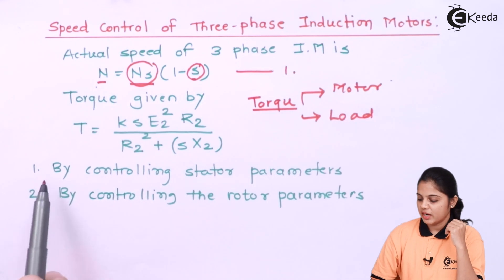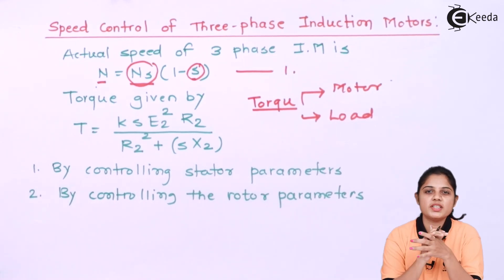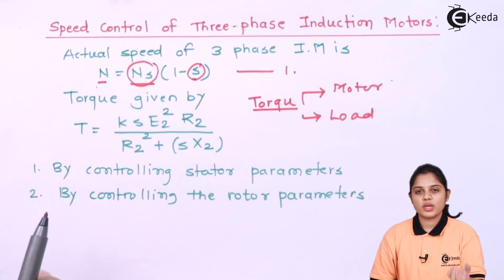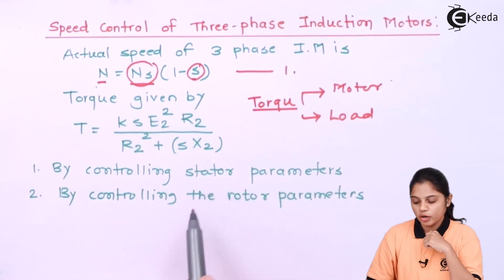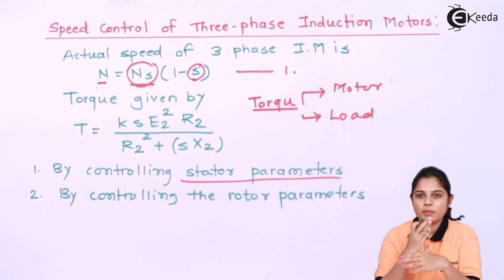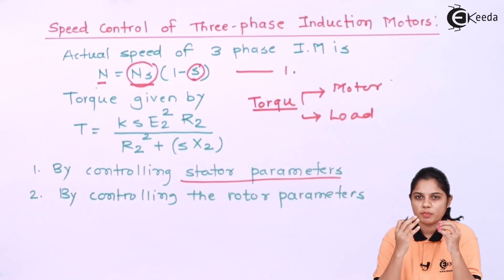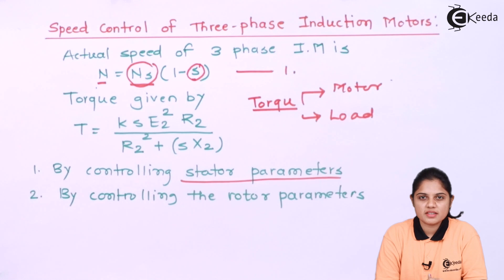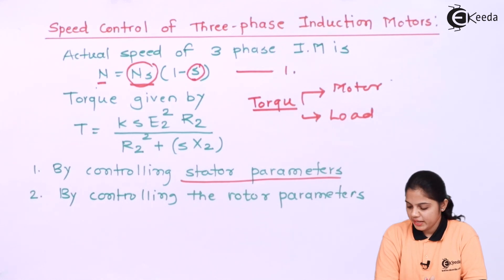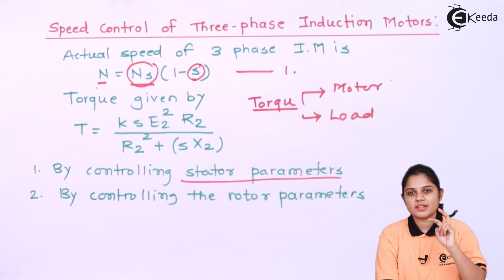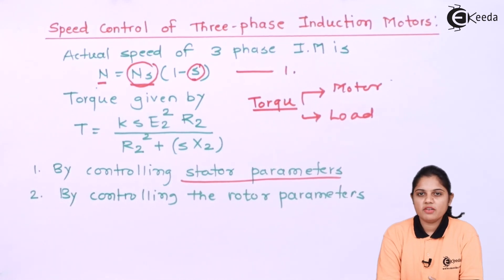The third point to be remembered is that you can control the stator or rotor parameters of the three-phase induction motor. When it comes to the stator parameters, these include the supply frequency, the voltage provided to the stator, the external resistance of the stator, and the stator winding. Similarly, you can control the rotor frequency and the external resistance of the rotor. These are the parameters we can vary to control the speed of the induction motor.